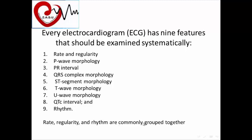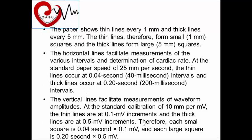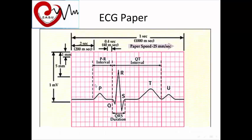First, we will talk about the ECG paper. It is composed of vertical lines and horizontal lines. Vertical lines measure voltage in millivolts, and horizontal lines measure time in milliseconds. We have small squares and large squares. The small square has one millimeter length and one millimeter width; the width equals 0.04 seconds or 40 milliseconds, and the height is 1 millimeter equals 0.1 millivolt. The large square contains five small squares, so it is 0.2 seconds or 200 milliseconds, and 0.5 millivolt.